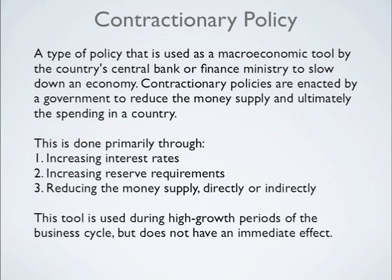Contractionary policy is a type of policy used as a macroeconomic tool by the country's central bank or finance ministry to slow down an economy. Contractionary policies are enacted by a government to reduce the money supply and ultimately the spending in the country. This is done primarily through: number one, increasing interest rates; number two, increasing reserve requirements; and number three, reducing the money supply directly or indirectly.